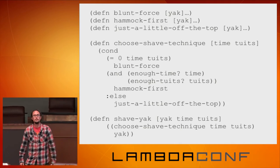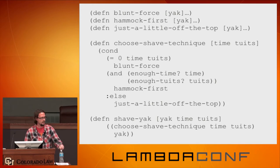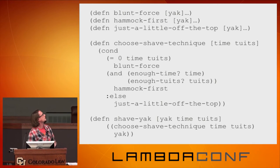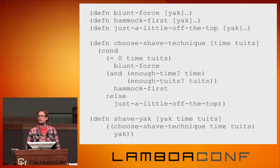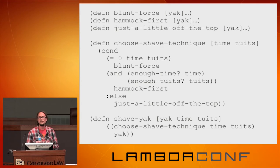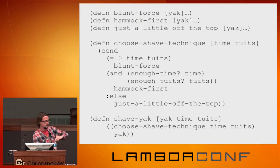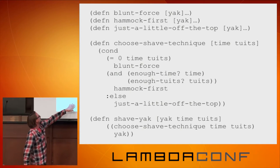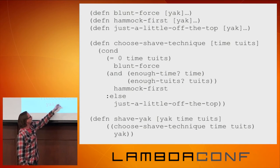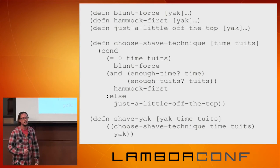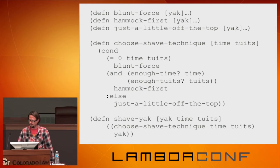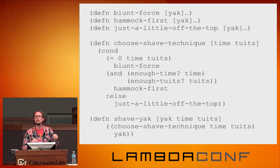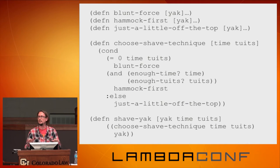This is a function that does the work of actually shaving the yak, but lets 'choose-shave-technique' select the strategy. You could use config values or anything else to switch out your strategy. To me this is a lot simpler than the Gang of Four implementation — in terms of objects, you'd need a class hierarchy, maybe define an interface or a couple of interfaces. Here, it's all functions. I'm calling a function that gives me a function that I call on the yak — such a simple way to express that. Any questions about that before I move on?